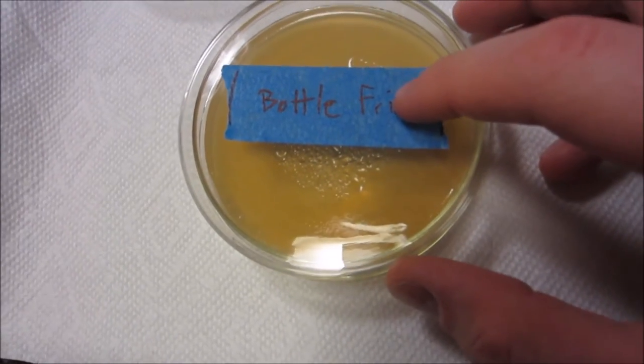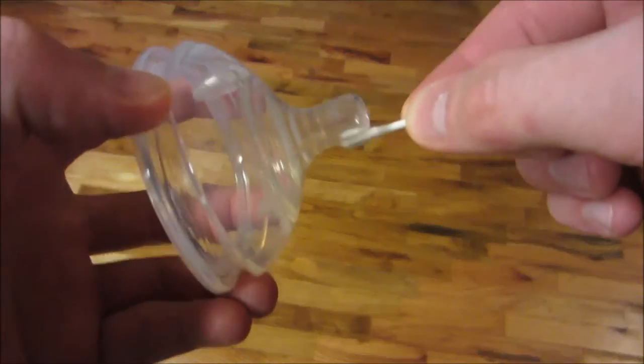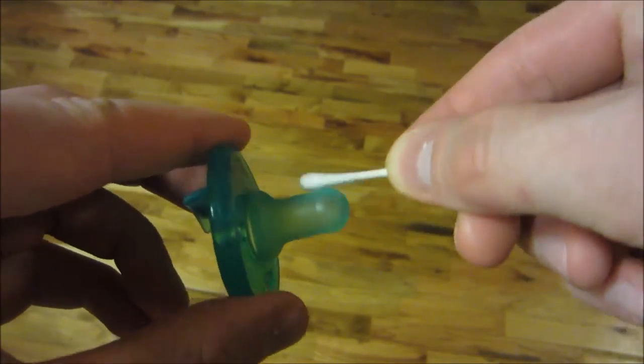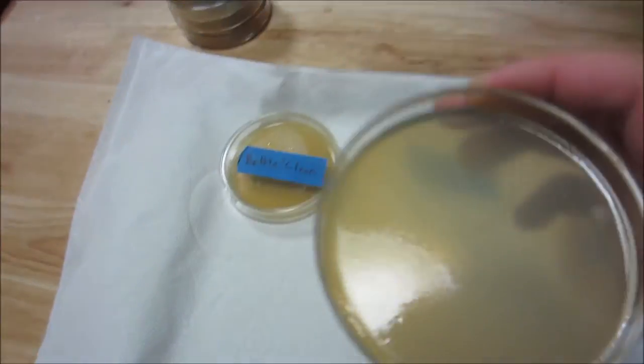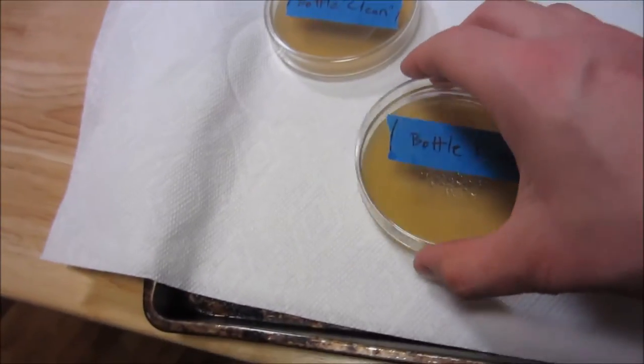Next, we have a rinsed bottle nipple. Surprisingly, the rinsed has about as much growth as the soap and water washed pacifier. I can only conclude that this has to do with the texture of the silicone itself. Both are medical grade silicone, so the frosted texture of the pacifier must be responsible for holding those extra microbes, whereas the very smooth silicone texture on the bottle nipple doesn't allow microbes to stick easily.